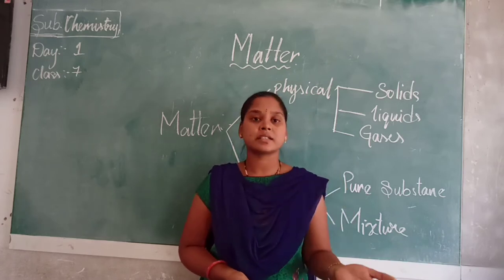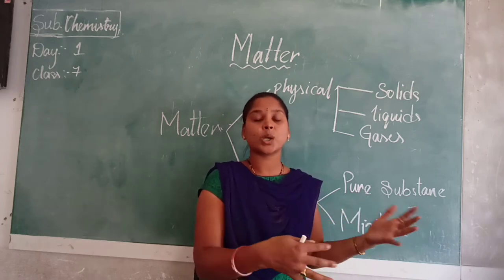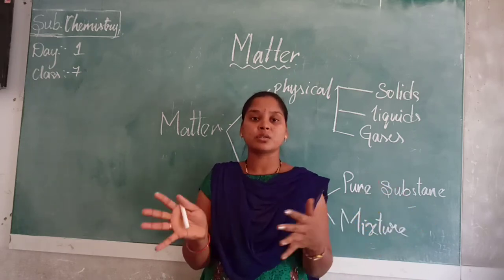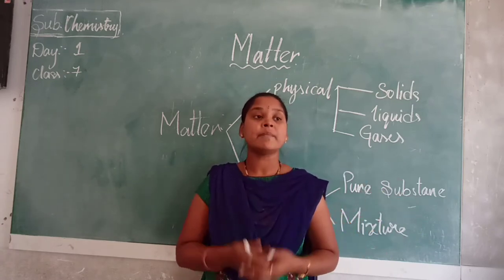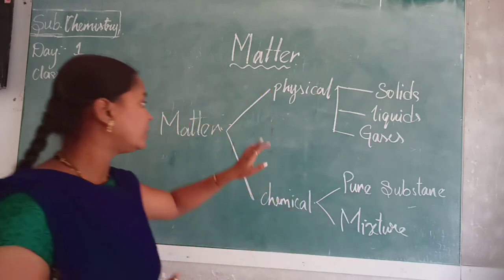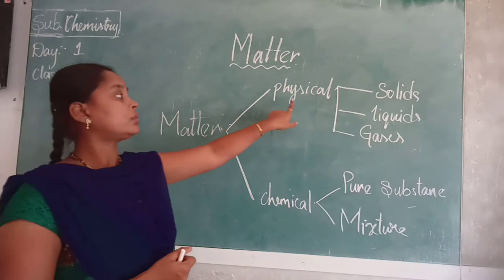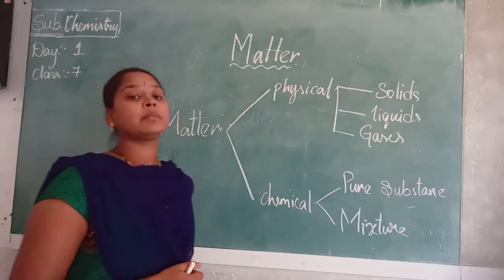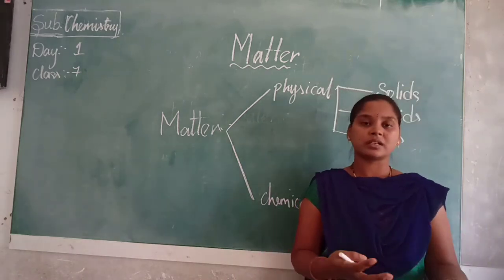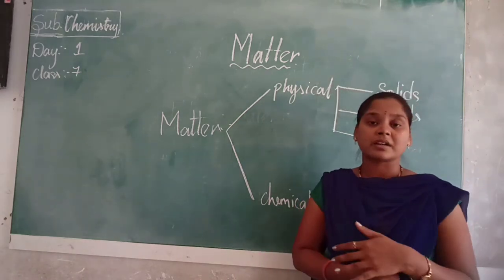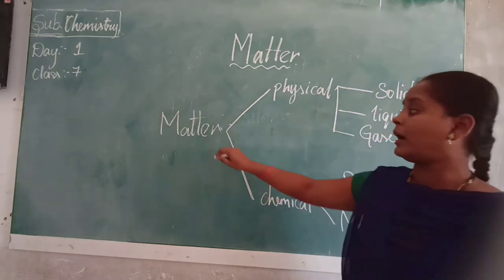Based on all these characteristics - based on chemical characteristics - whatever we have discussed is about physical properties: how they look, soluble, insoluble, conductors, insulators. These are all the physical properties. When coming to chemical properties, matter is divided into two: physical characteristics as well as chemical characteristics. Physical characteristics are nothing but the soluble, insoluble, conductors and insulators.